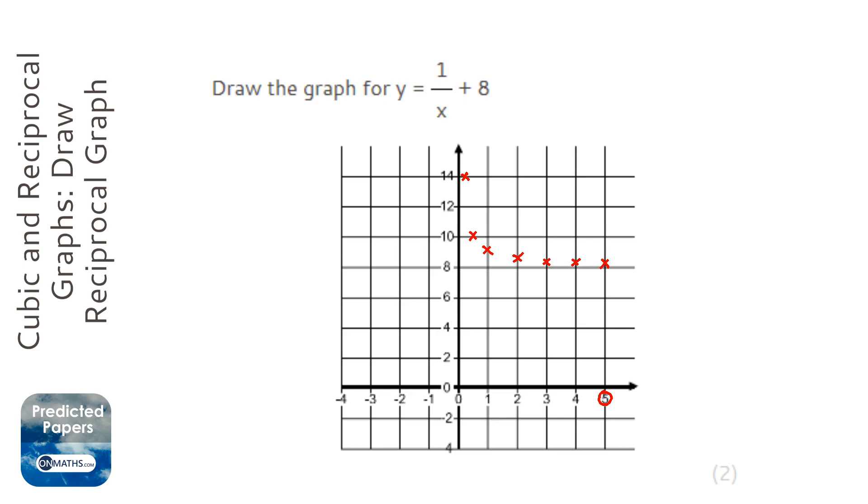And so looking at the other side, minus 4, so 1 over minus 4 plus 8, so that would be 8 take away a quarter, so it would be just under 8.